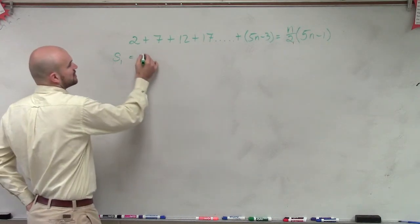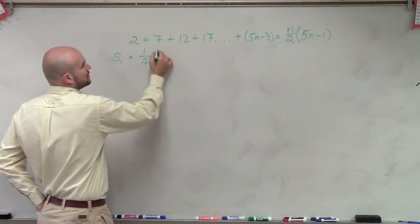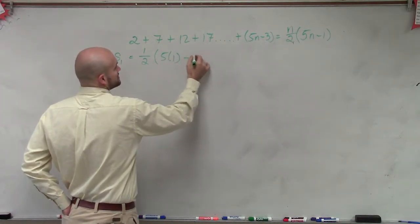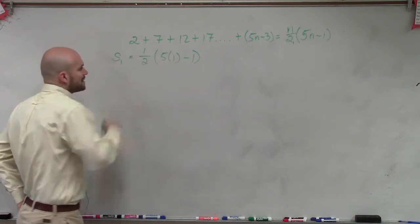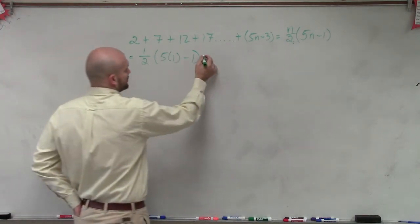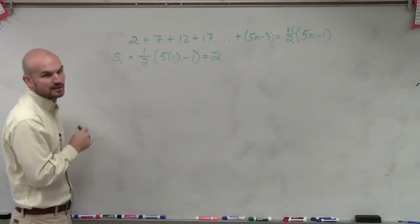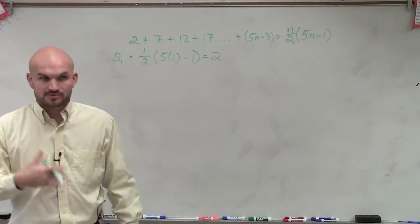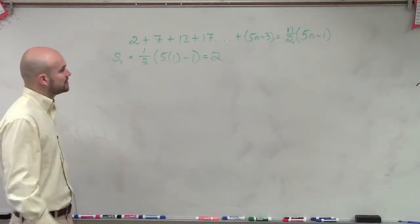So if we put in the first term, we have 1 over 2 times 5 times 1 minus 1. Well, 5 times 1 is 5 minus 1 is 4. 4 times 1 half equals 2, which you guys can see would be our sum of our first term. So the sum works for the first term.